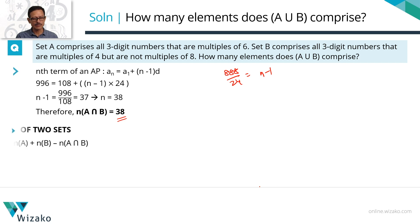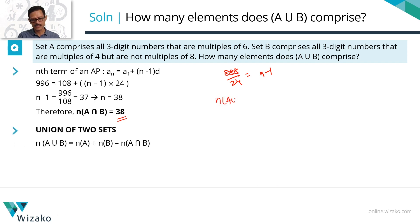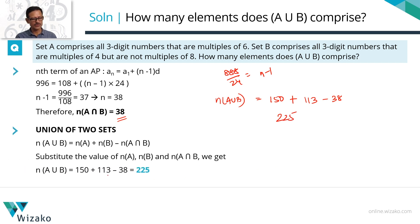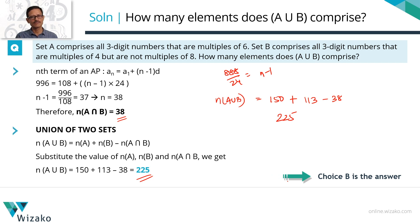Now we can compute N(A∪B): N(A∪B) = N(A) + N(B) − N(A∩B) = 150 + 113 − 38 = 225. So the number of terms in A∪B is 225. Choice B is the correct answer to this question.